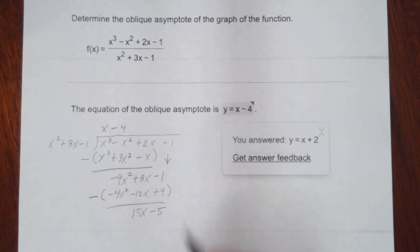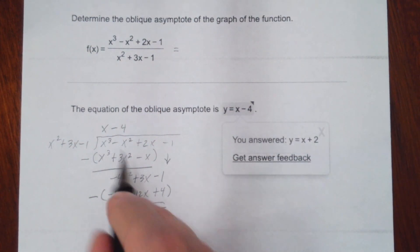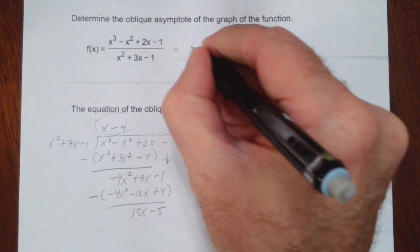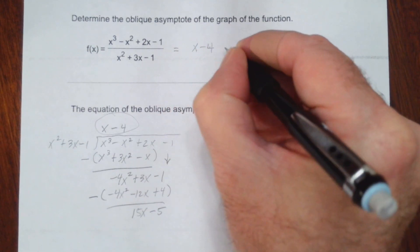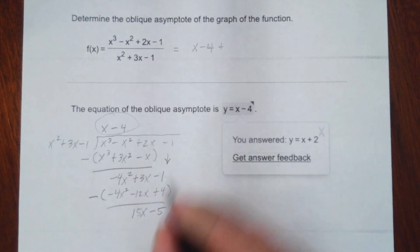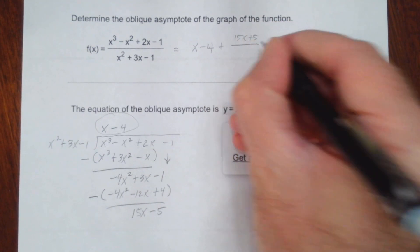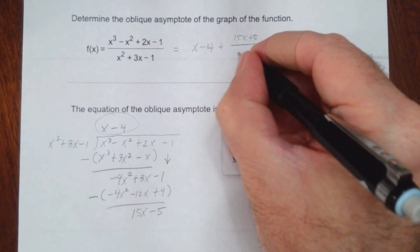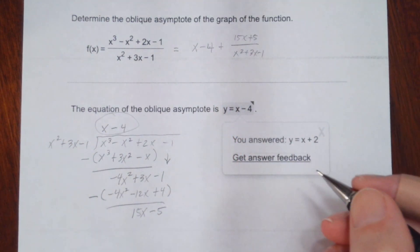Alright, so we can actually rewrite this using the answer we just got. The quotient, or our answer, is x minus 4 plus the remainder we got, 15x plus 5, over our divisor, x squared plus 3x minus 1.